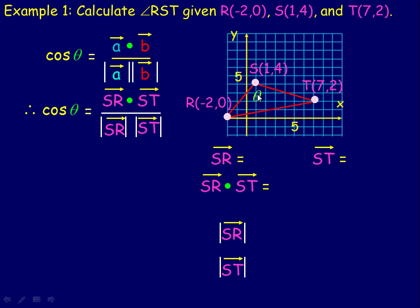To find angle RST, we need to create two vectors that form that angle at S. Those vectors are SR and ST. Vector SR goes 3 to the left and 4 down, giving components (−3, −4) — you can also subtract the coordinates: −2 − 1 = −3, 0 − 4 = −4. Vector ST goes 6 to the right and 2 down, so it's the vector (6, −2).